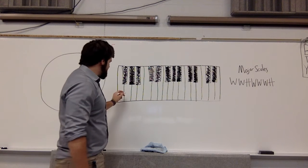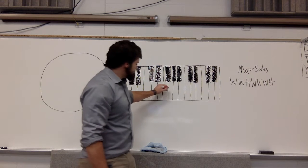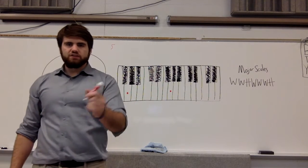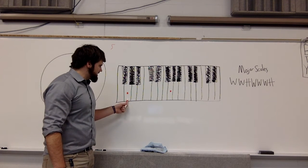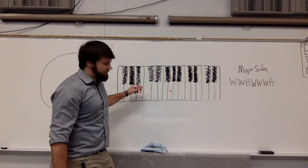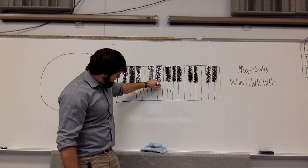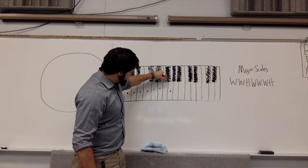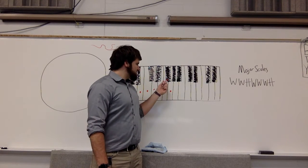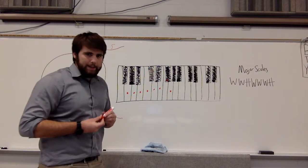Once you know G, you instantly know the eighth note — G again. So we've got to get from here to here. Now all we've got to do is follow the pattern. To get note two, we go up a whole step — one, two. Another whole step for note three. For note four, just a half step. For note five, a whole step. Note six, another whole step. Note seven, another whole step. And then up another half step to get there. That's how you build the G scale.